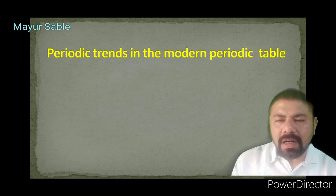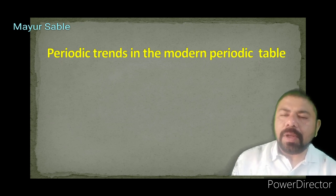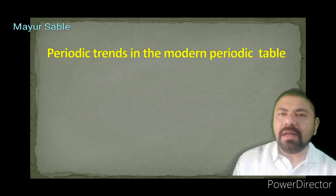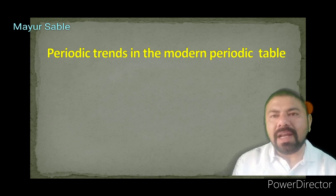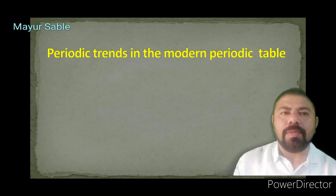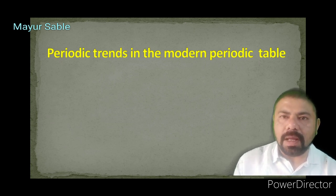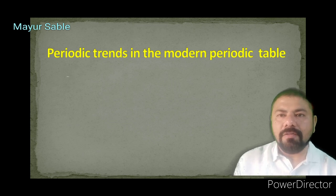In this standard, we are going to consider the periodic trends in only three properties of elements: valency, atomic size, and metallic/non-metallic characteristics. The first periodic property or trend we are going to study is valency.